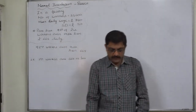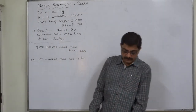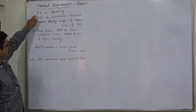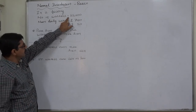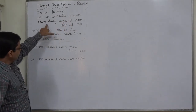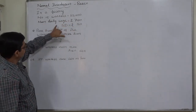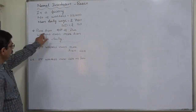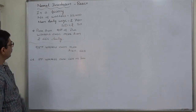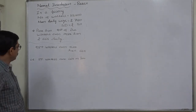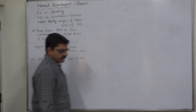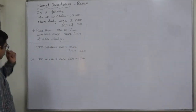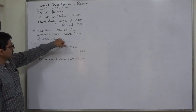Hello and welcome. A new case in normal distribution. The data available is: in a factory the number of workers are 10,000, their mean daily wages is 750, and the standard deviation of daily wages is 50. Prove or show that 95% of the workers earn more than 668 daily.